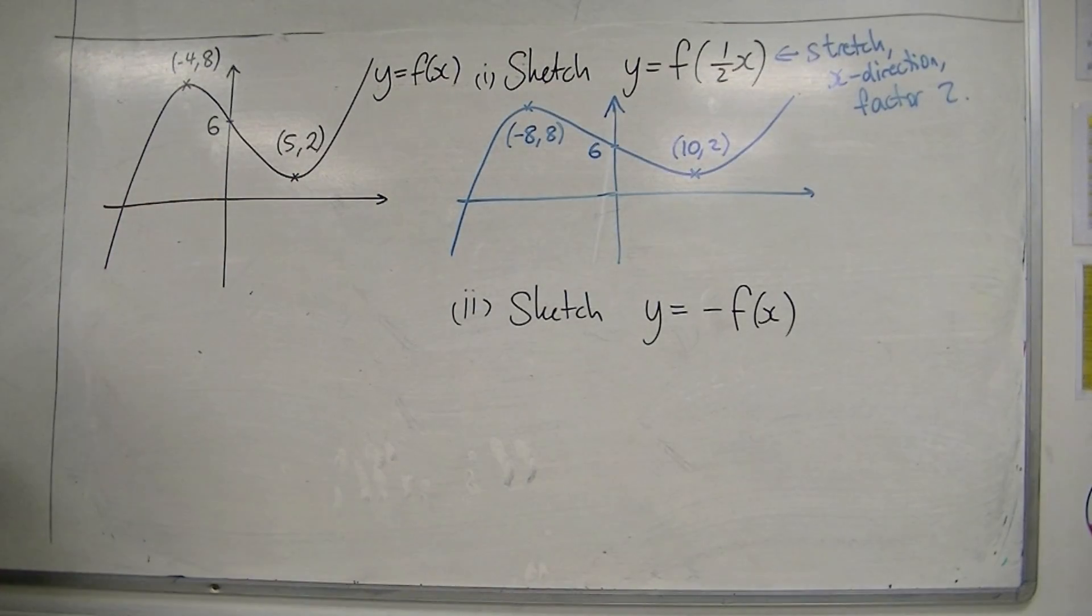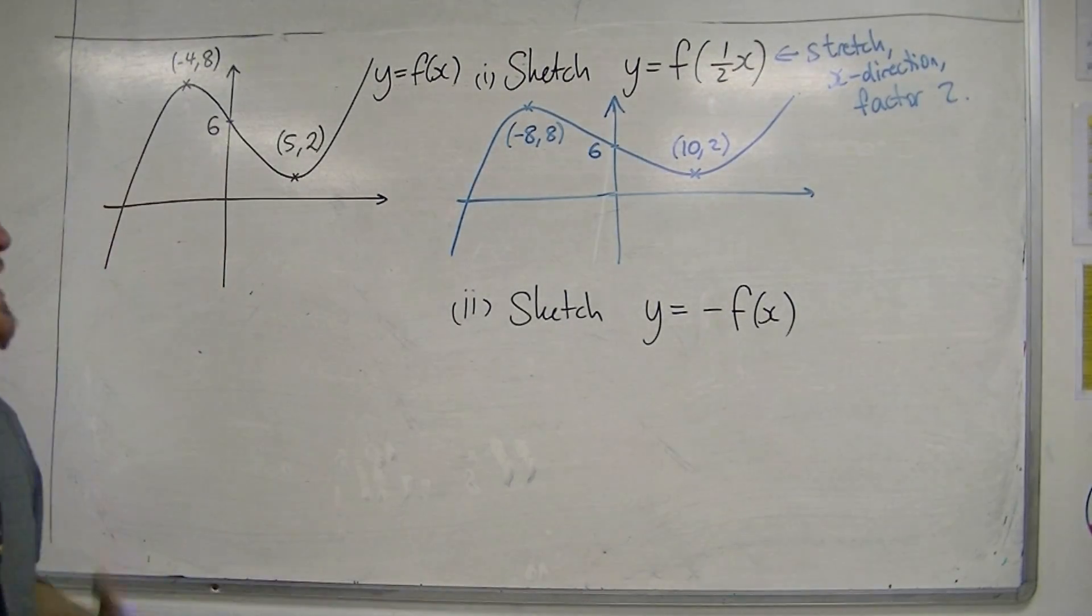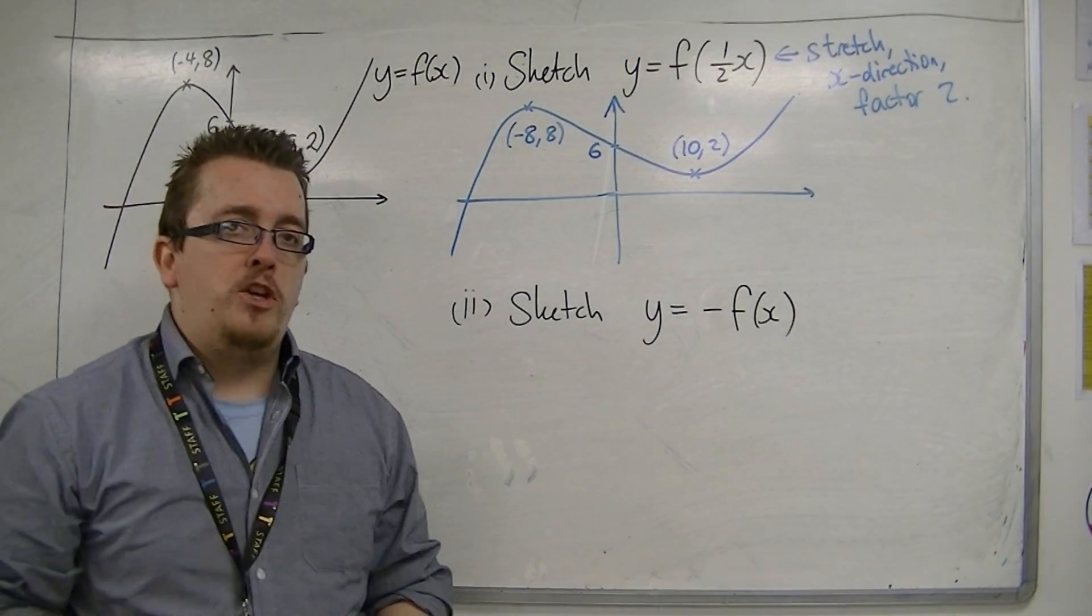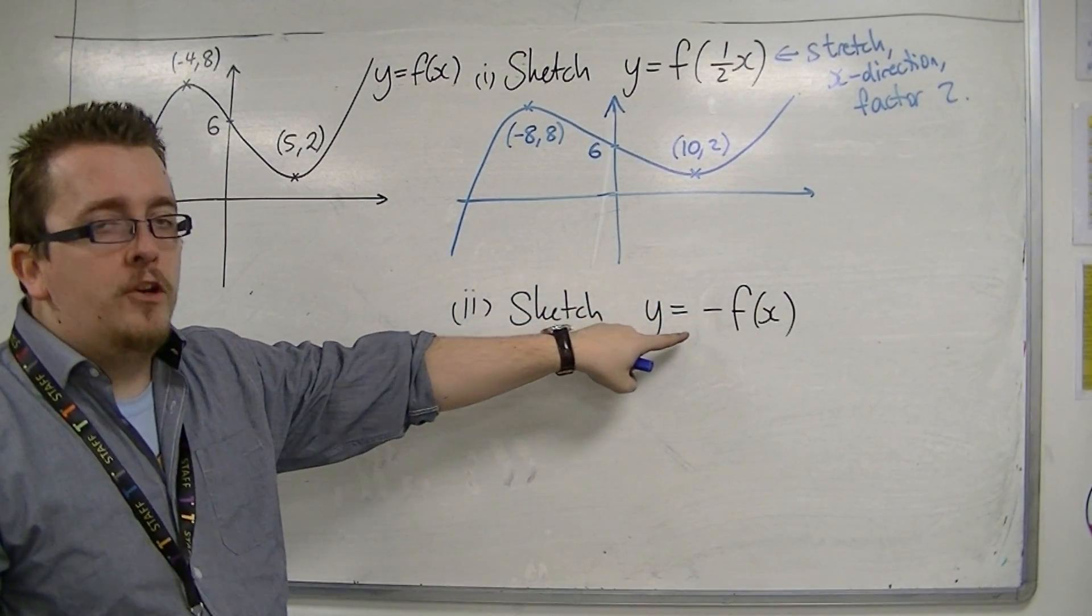In our second example, sketch y equals minus f of x, we need to identify what type of transformation that is. Now, the minus sign is on the outside of the function.